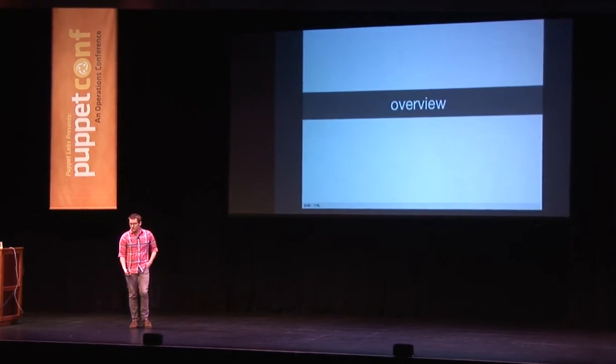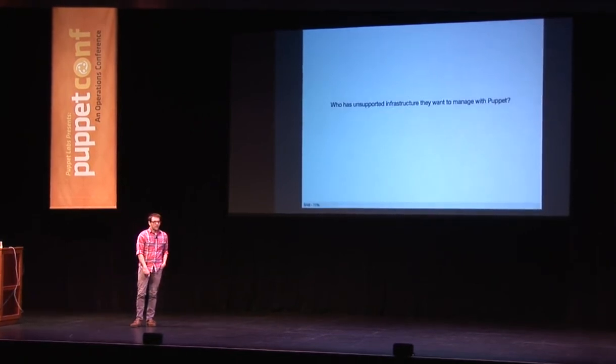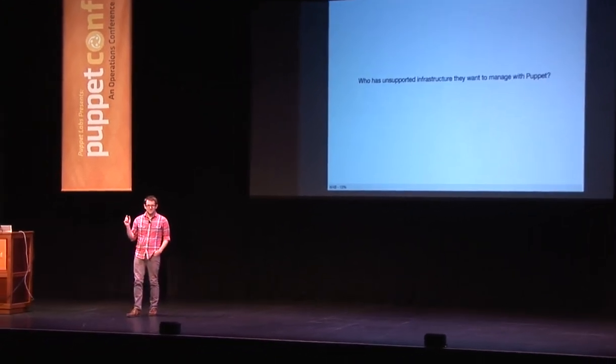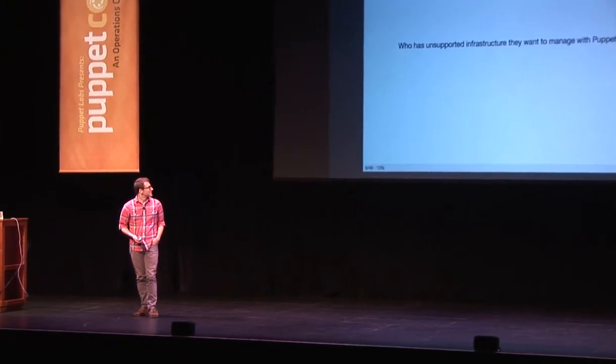So I have a few questions to start with. Who here has infrastructure that they would like to manage with Puppet but currently can't? Awesome. Who here has actually tried to write a custom type and provider? And how many have succeeded? Okay, not too bad.